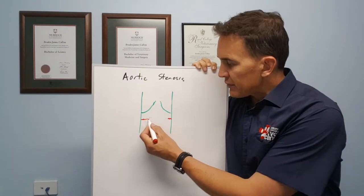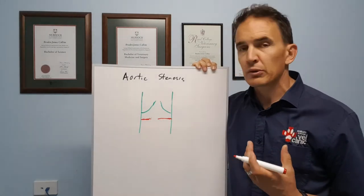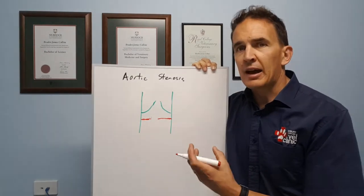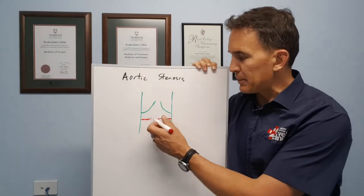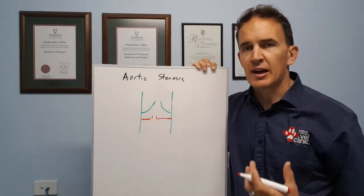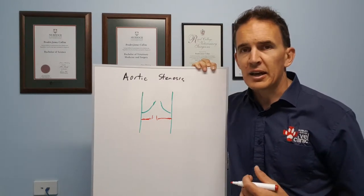If this gets quite severe, if the narrowing is quite extreme, then we start to get quite marked problems with the heart. The heart has to work very hard to squeeze the blood past this narrowing and we get a lot of secondary changes to the heart that progress to heart failure, and it can be fatal in a lot of cases.